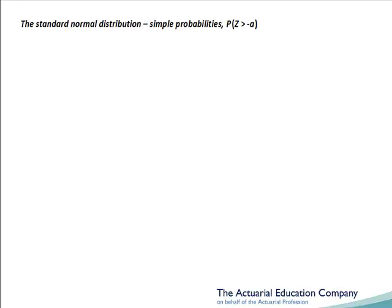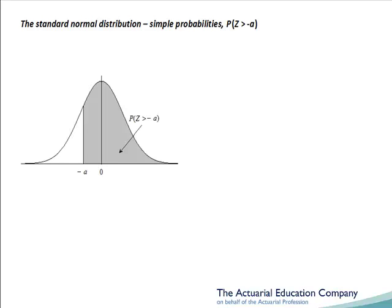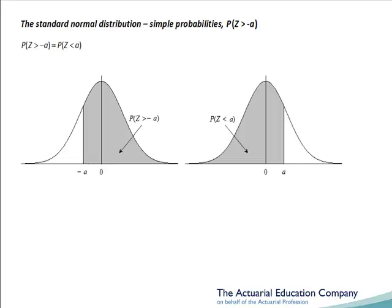Let's have a look at how we can calculate probabilities that z is greater than a negative number, say minus A. Negative values are not tabulated, so we're going to use the fact that the standard normal distribution is symmetrical about 0. By symmetry, the probability that z is greater than minus A equals the probability that z is less than A. Once again we can use our swap the sign, swap the sign shortcut rule: we are swapping the inequality sign from greater than to less than, and we are swapping the sign of the number from negative to positive.